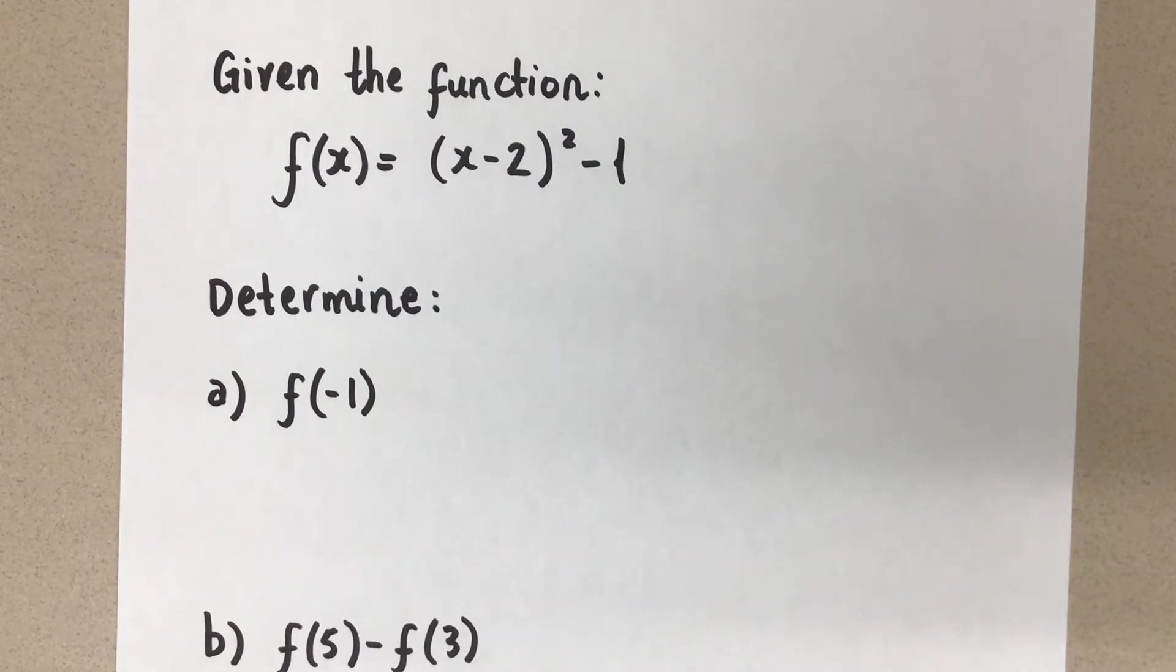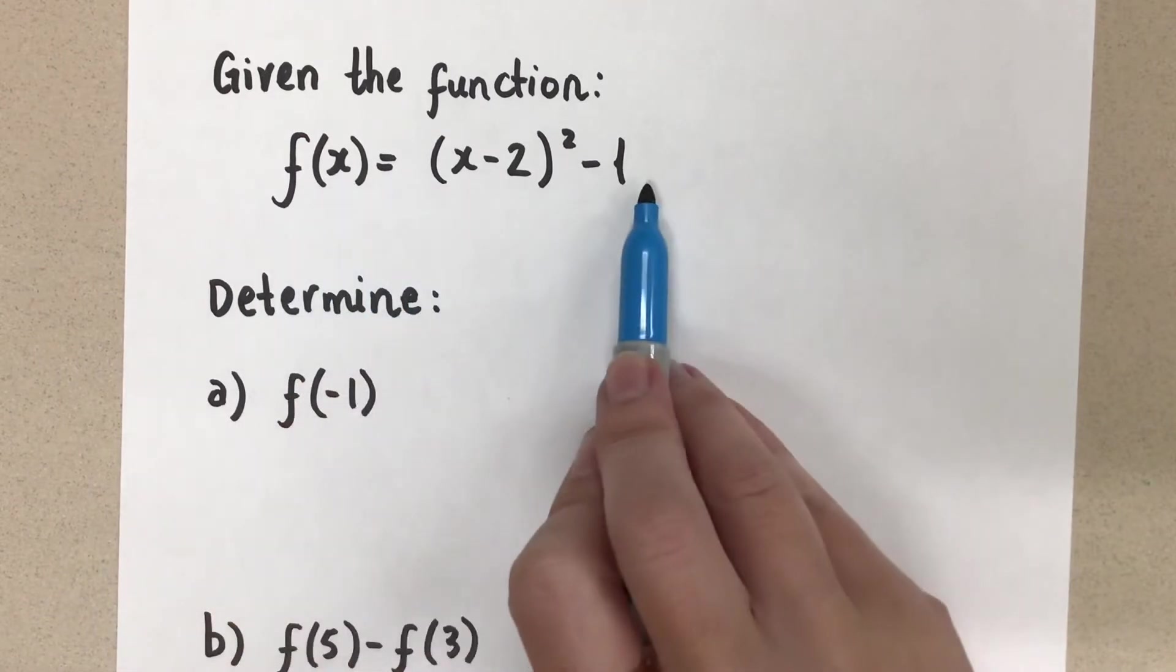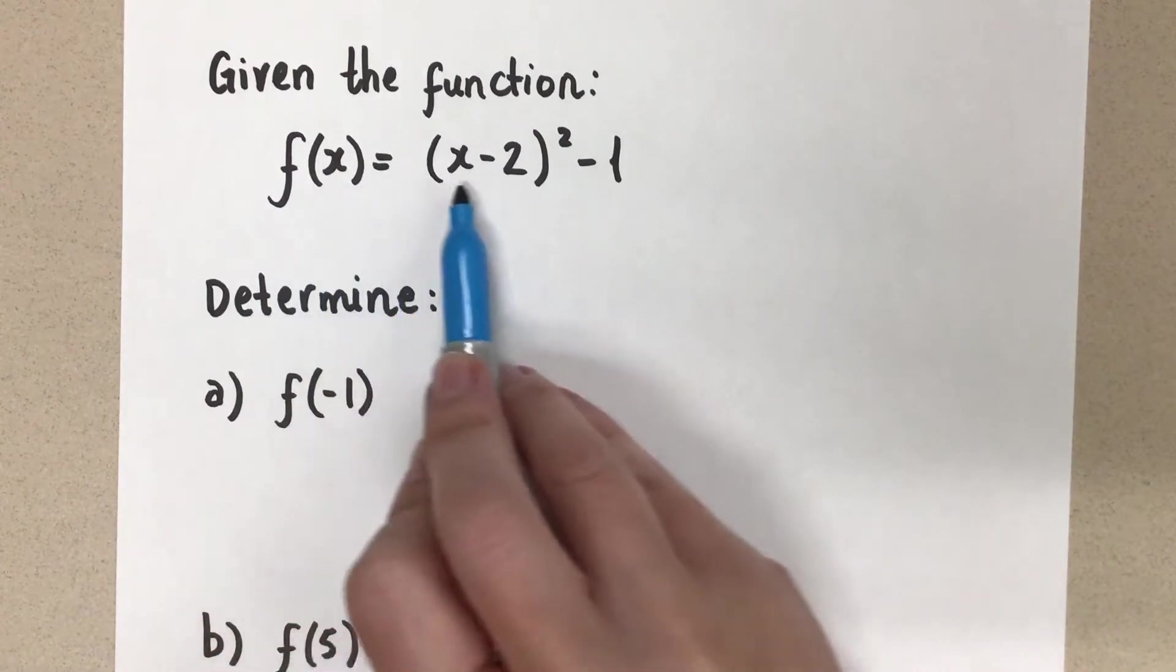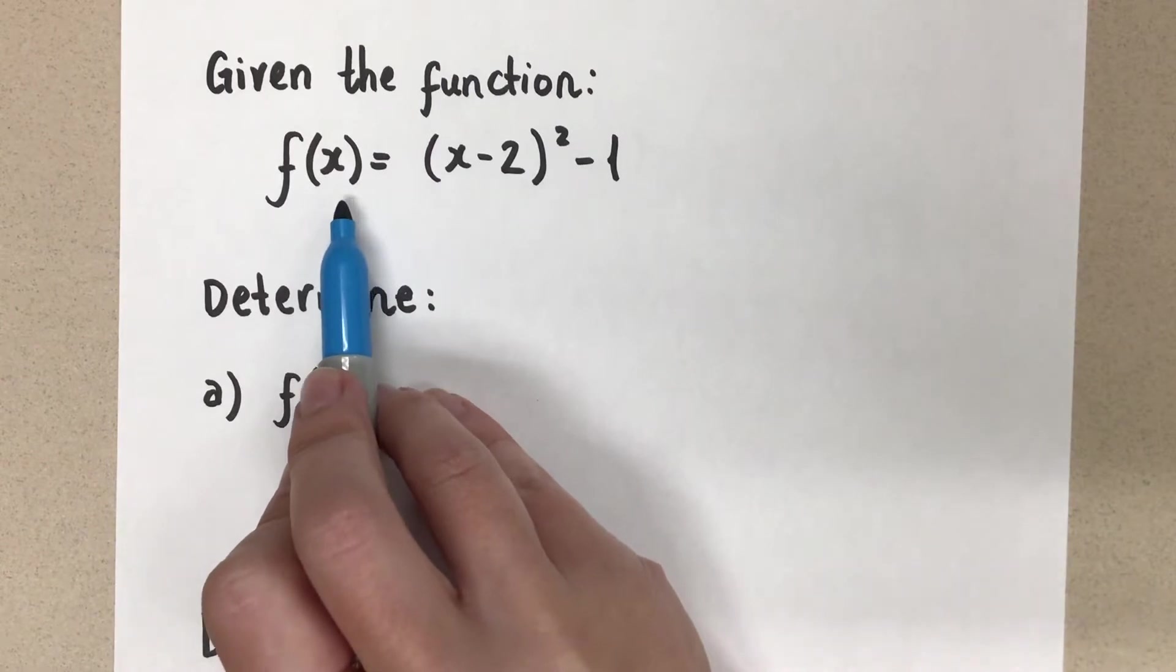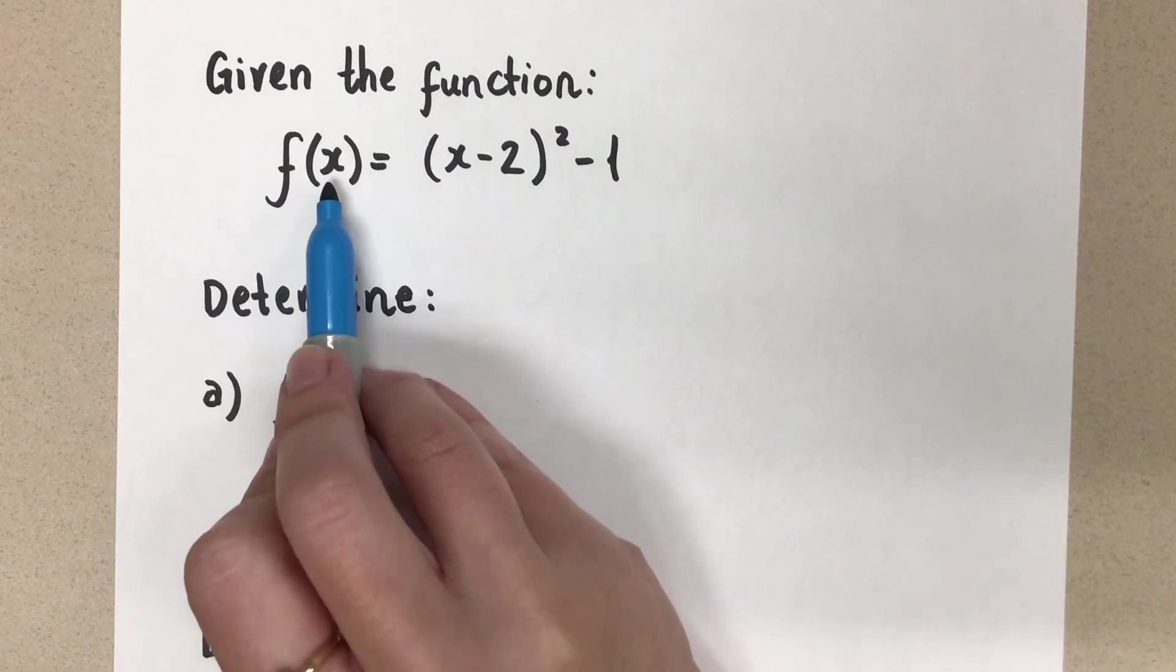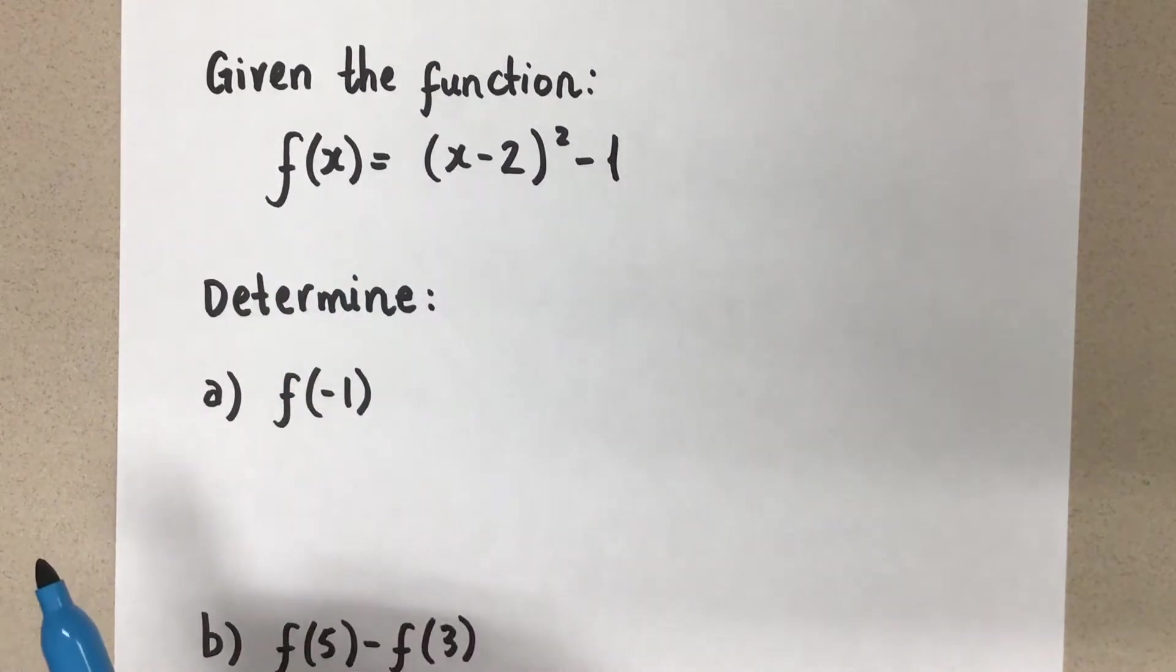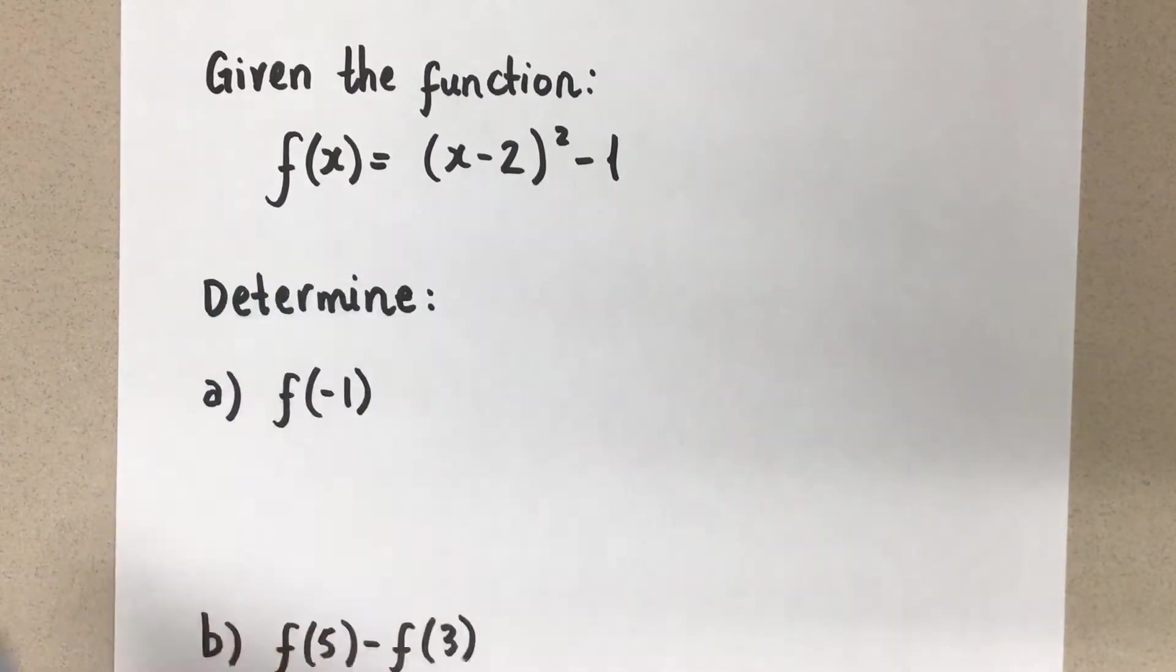Up until now, if we had an equation of a relationship, we usually saw it in the form of y equals and then the equation. And now you see we've written this as f at x equals and then the equation. This notation is called function notation and it means the y value when you sub in an x value. So we're looking for the y coordinate of a point when you have a certain x coordinate. So we always want to think about this as the corresponding y value. Nothing has really changed, it's just a notation thing.